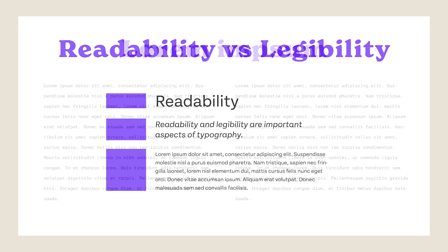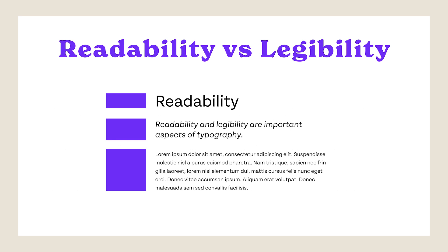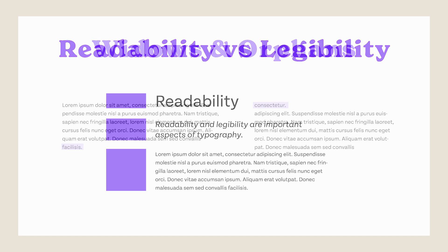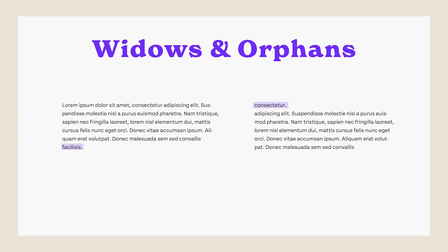Lorem ipsum is a placeholder text commonly used in design projects to showcase the design without meaningful content until the final copy is available. Readability and legibility are important aspects of typography — readability refers to how blocks of text are arranged on a page, while legibility pertains to the distinguishability of individual characters. Widows and orphans are terms used in typesetting: a widow is a short line or word at the end of a paragraph causing excessive white space, while an orphan is a short line or single word at the beginning of a column or page. By applying these visual design principles, you can create compelling designs for social media, print, posters, flyers, and newsletters.